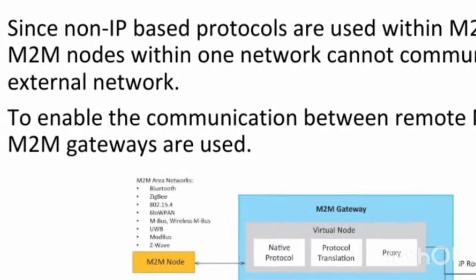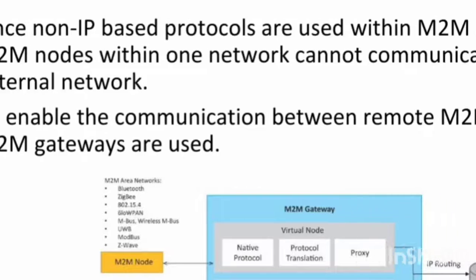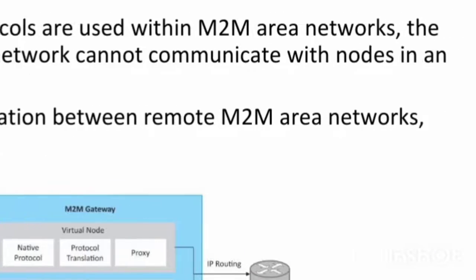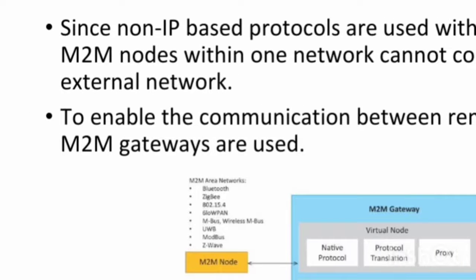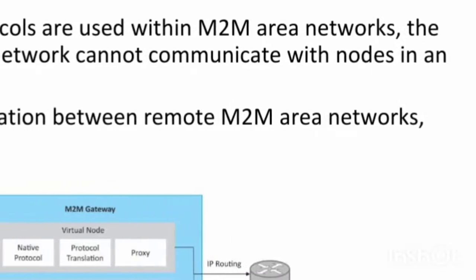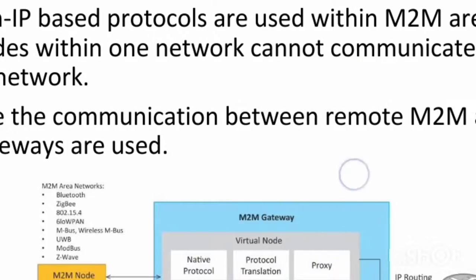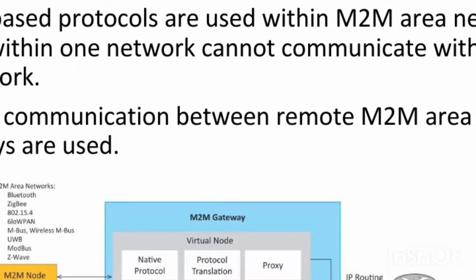The M2M gateway — we already have the conceptual idea of how we can communicate. Since non-IP based protocols are used within M2M area networks, the M2M nodes within one network cannot communicate with nodes in an external network. To enable communication between remote M2M area networks, M2M gateways are used, providing native protocol translation as shown in the diagram.